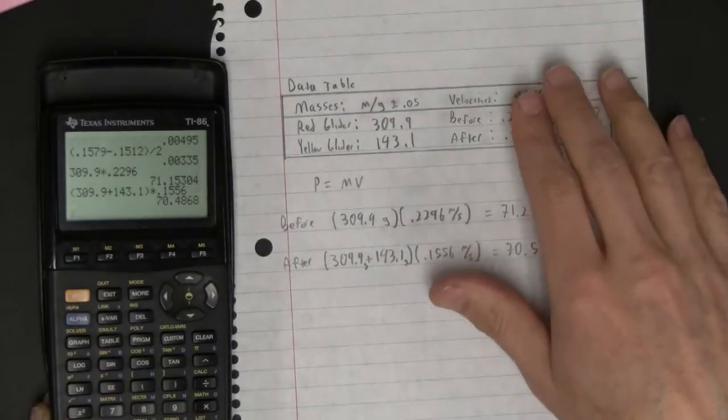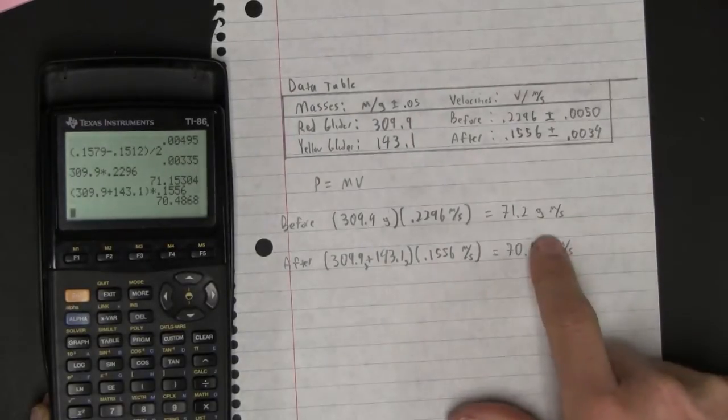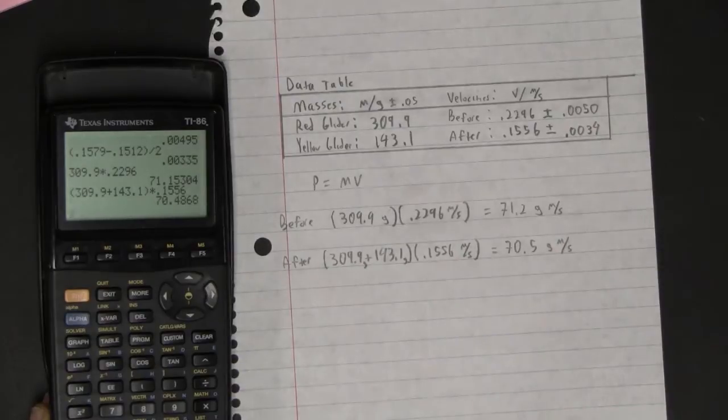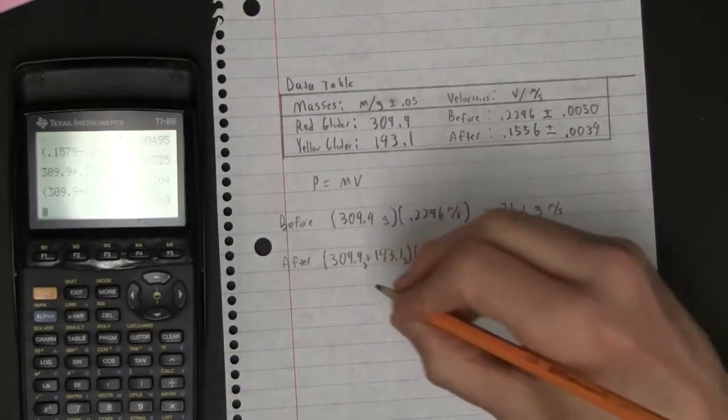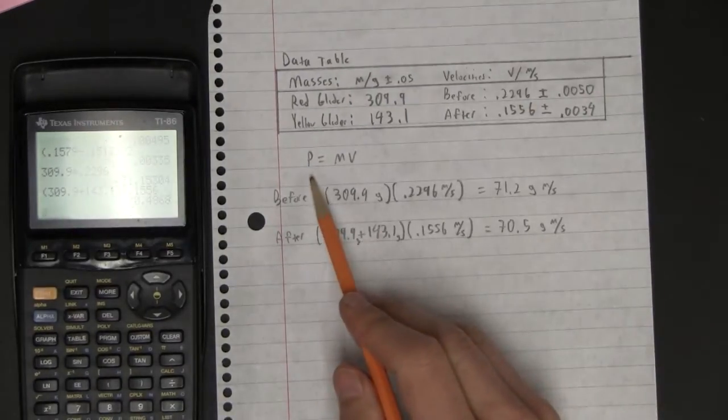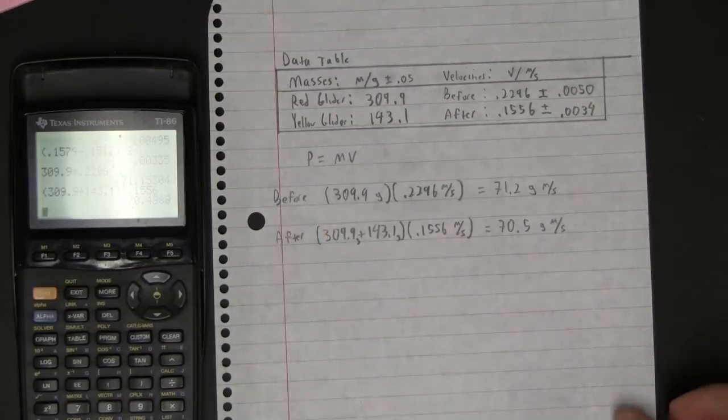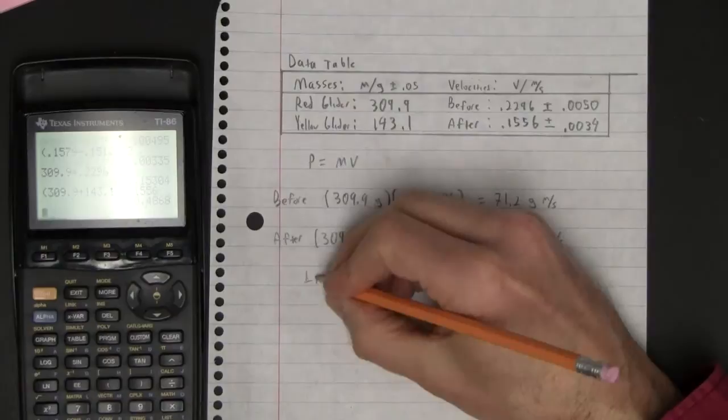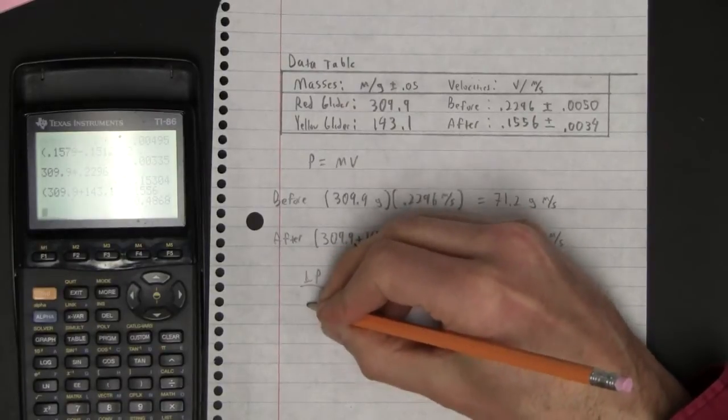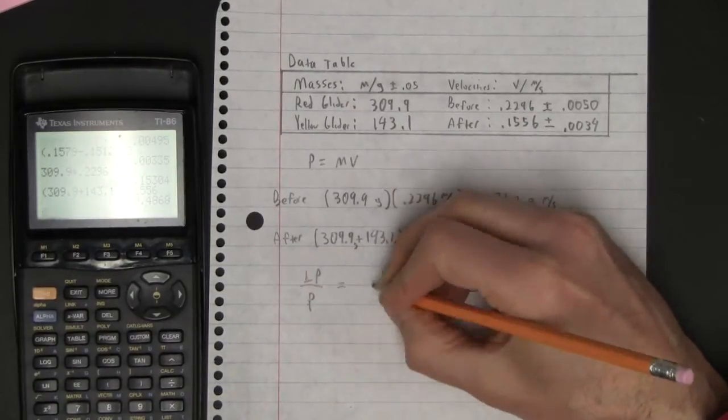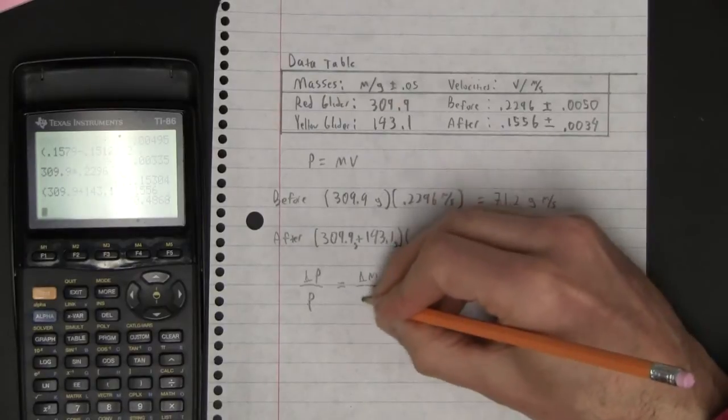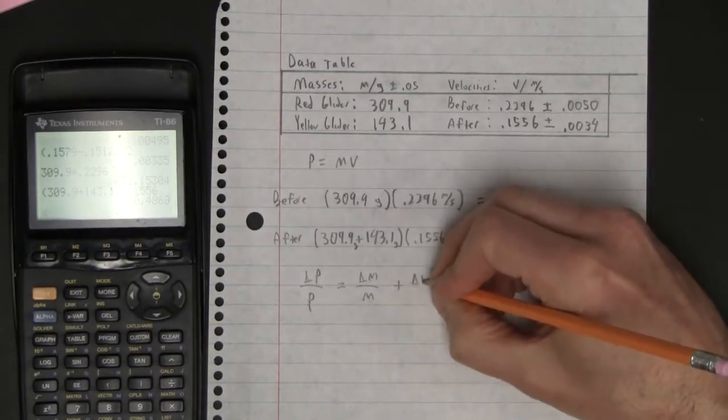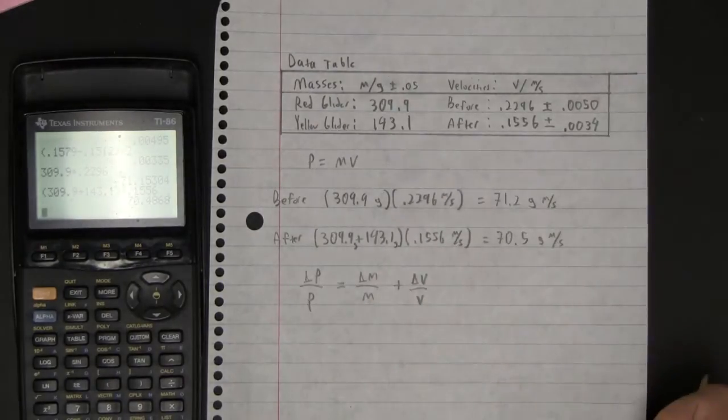Okay, now you've got your data table and you've got your momentum calculations. Now let me show you how to calculate the uncertainty. In general, if the momentum is this, then the uncertainty of that calculation is going to be that divided by what the momentum really is equals the uncertainty of mass over mass plus the uncertainty of velocity over velocity.